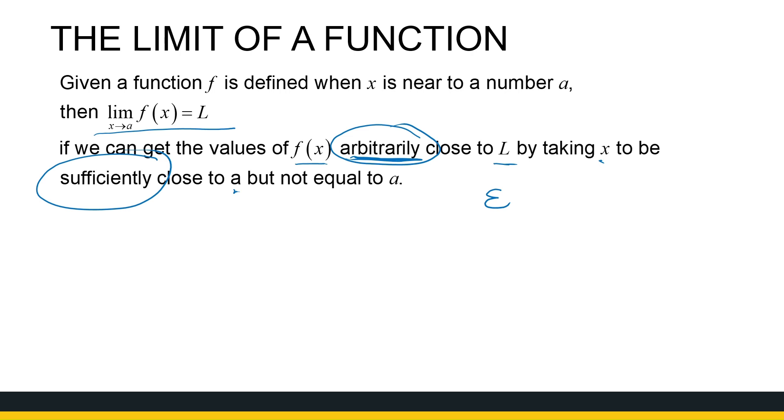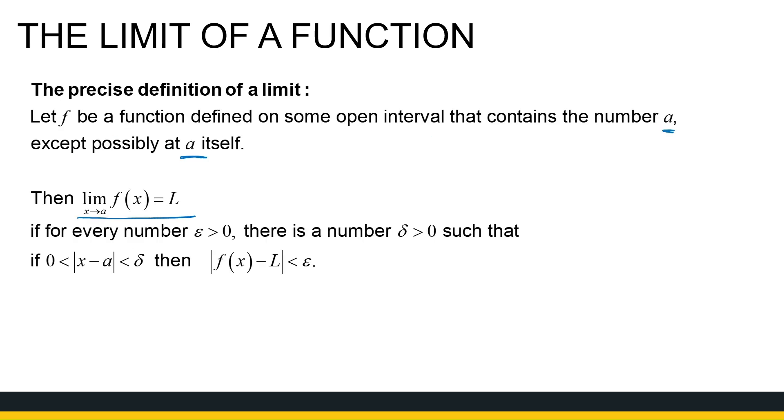I'm saying I want to get epsilon - that's the number how close I want to get to l. And epsilon is a positive number, but it's just bigger than zero. That's how close I want to get to l. And the question is, how close do I need to get to a so that I can get that close to l?